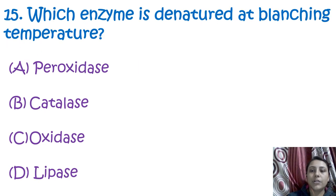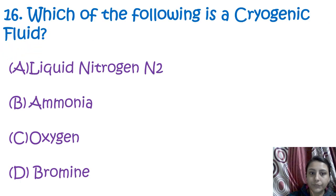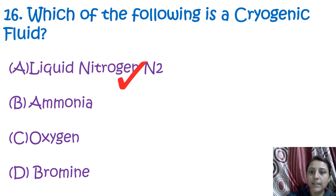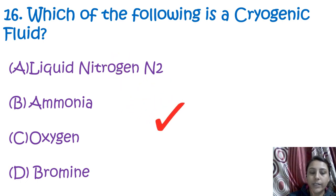The next question is: which enzyme is denatured at blanching temperature? That is peroxidase enzyme. The following question asks which is a cryogenic fluid — oxygen is known as the cryogenic fluid.